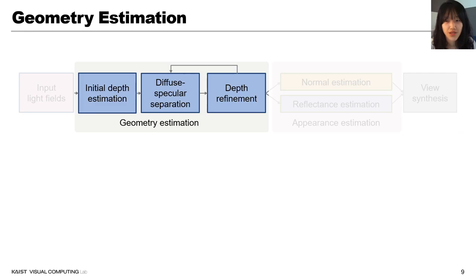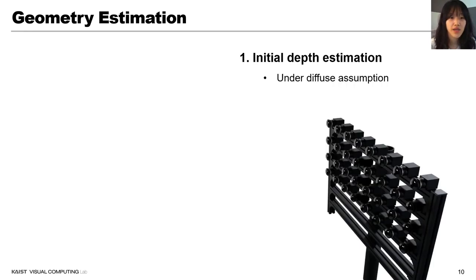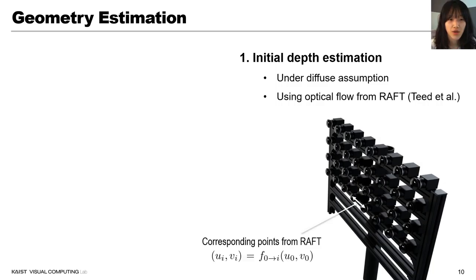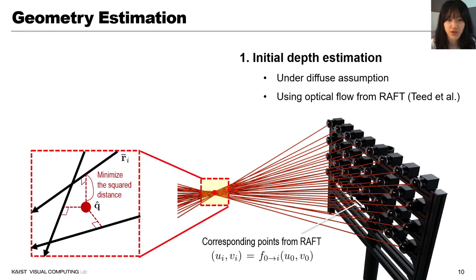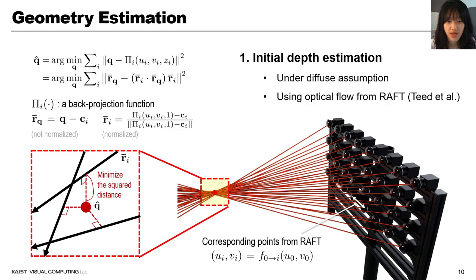In the geometry estimation stage, we estimate the initial depth first under diffuse assumption. We use optical flow from RAFT to get corresponding points among sub-aperture images. Unprojected corresponding points would converge to a 3D point but maybe not exactly. Thus, we find a point that minimizes the squared error distance to all of the camera rays. This can be formulated as a linear least squares problem.